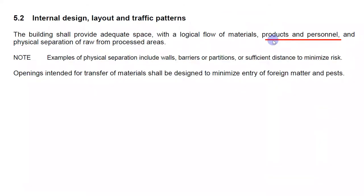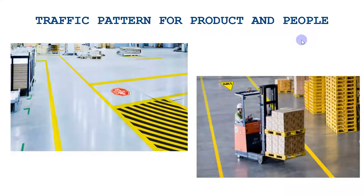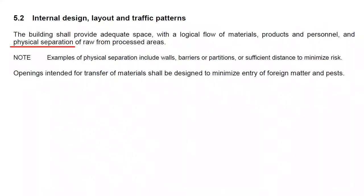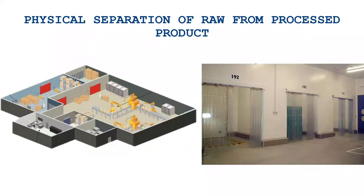The third point is products and personnel, which we normally call traffic patterns. You mark on the floor the traffic pattern for products and people. To comply with this clause you can mark lines showing the movement of people and materials. The next point is physical separation of raw from processed areas.